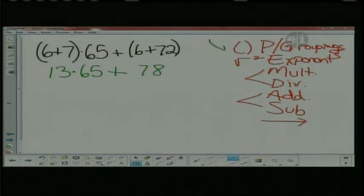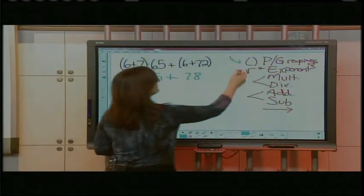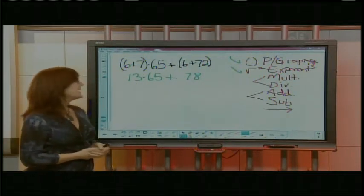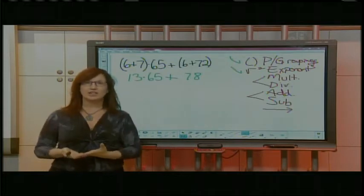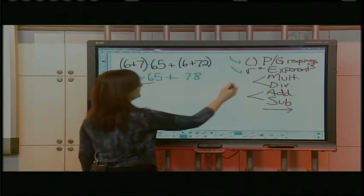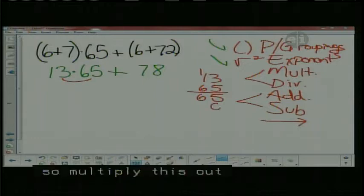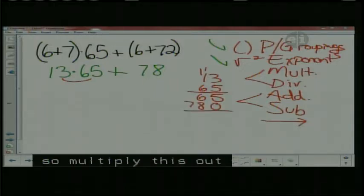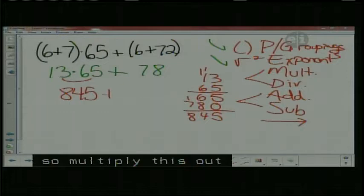The M stands for multiplication and D stands for division. The thing to know is even though you see M written first then D, they're equal to each other. One's not more favorite than the other. You're going to do whoever comes first from left to right. The same thing happens with addition and subtraction. You don't always do addition before subtraction. It's when you read the problem as you go across from left to right, which one comes first. Now we're ready to solve this problem. I'm going to look for anything that groups these together, like parentheses or absolute value brackets. I see two sets of parentheses. 6 + 7 is 13, and 6 + 72 is 78. I bring everything else down.